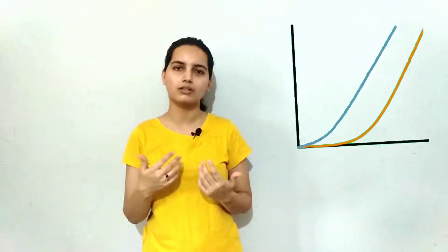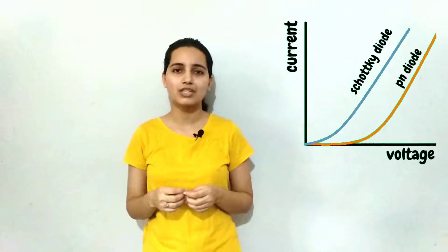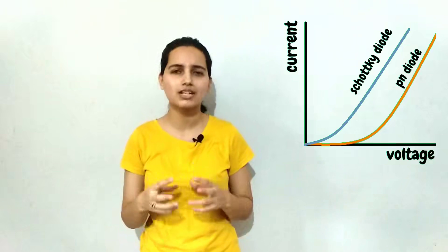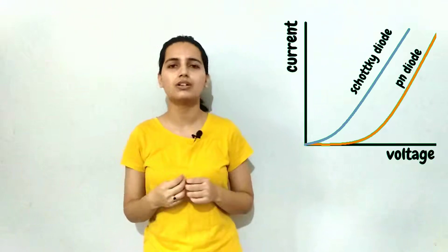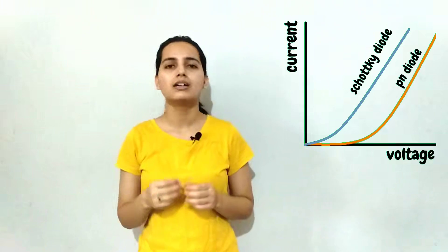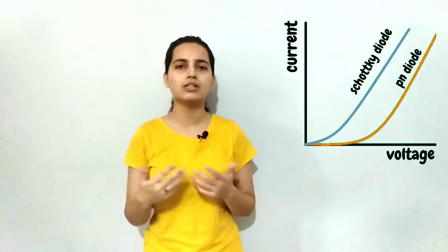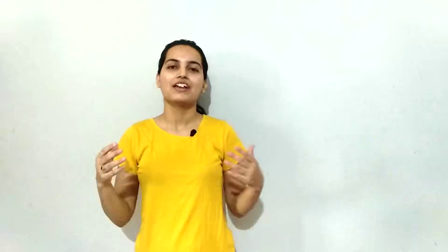The basic difference between a PN junction diode and a Schottky diode in forward bias is the threshold voltage. In a PN junction diode, a certain threshold voltage is required to break the depletion region and allow current flow. In a Schottky diode, this threshold voltage is a little less because the number of electrons involved is greater.